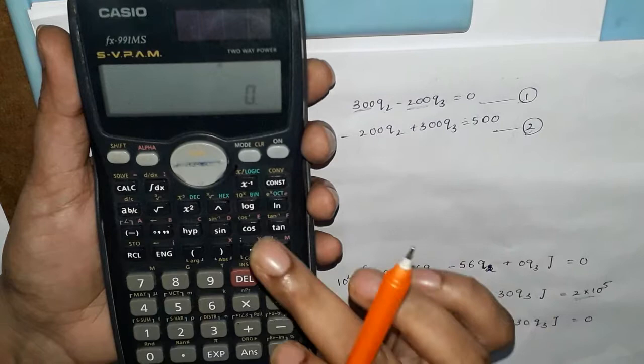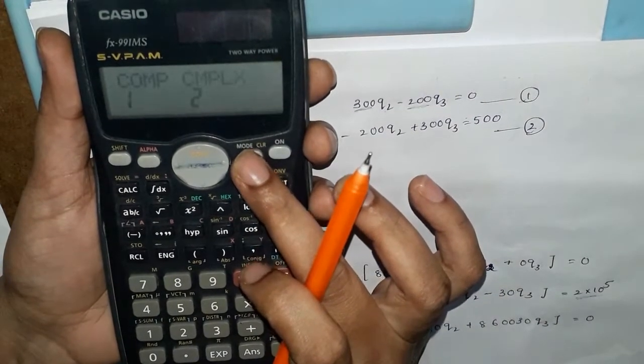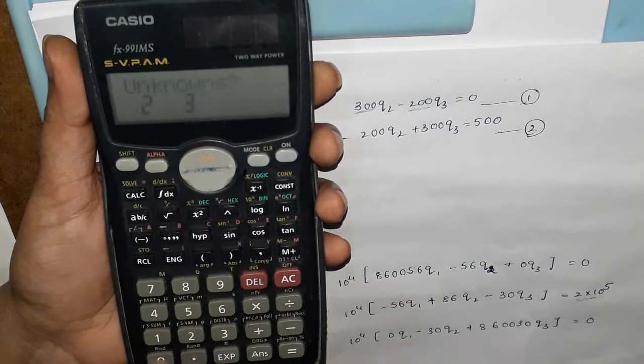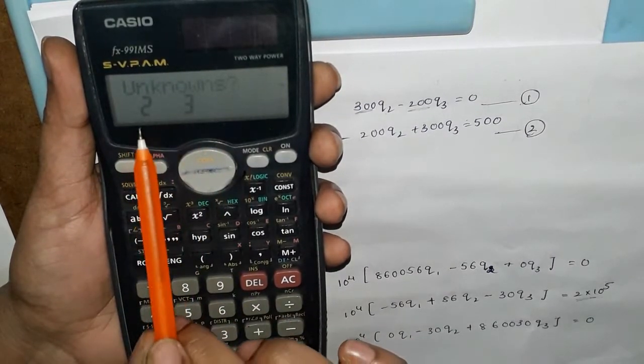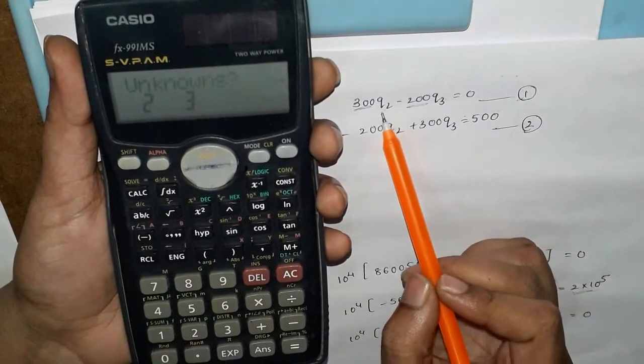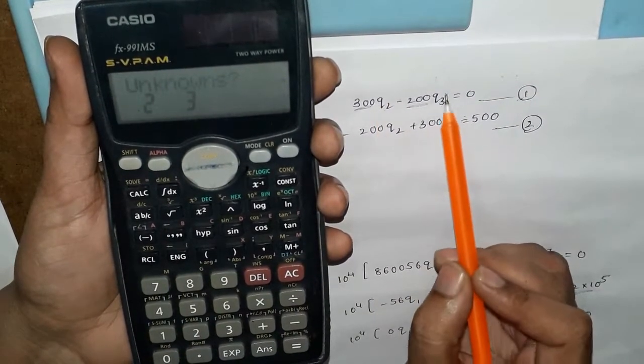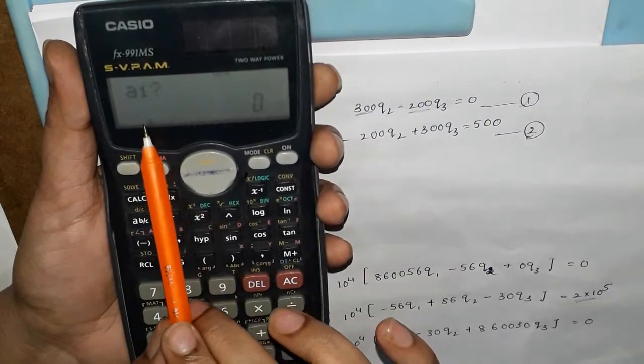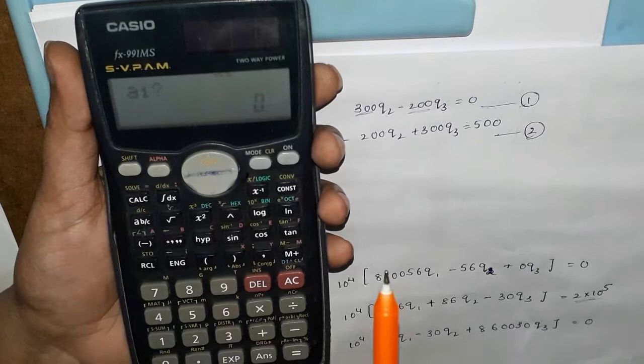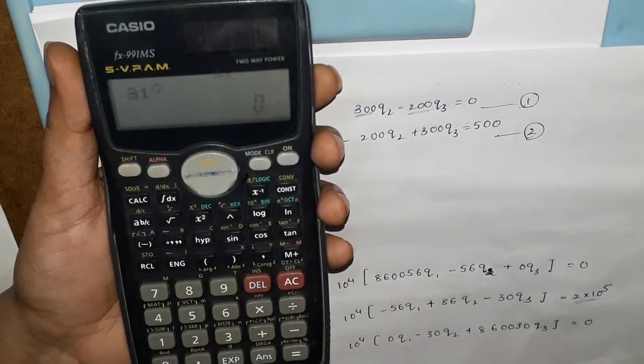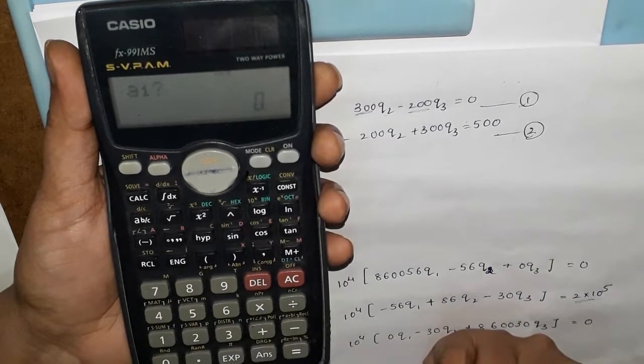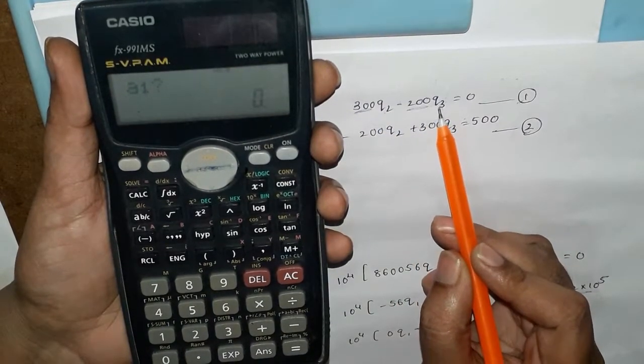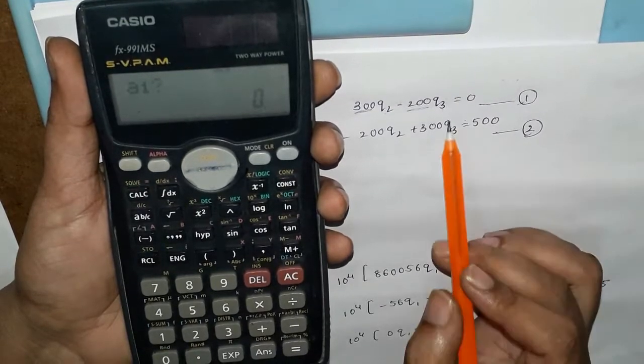So two equations in this video we will solve. On the calculator, first we will click on mode, then equation. We'll click on the number for unknowns. We have 2 unknowns q₂ and q₃, so we will click on 2 unknowns. Then we enter the equation values.